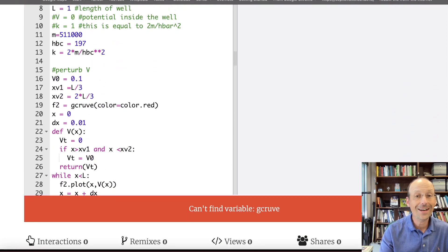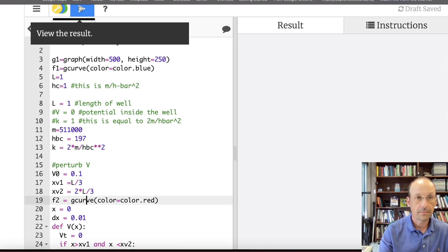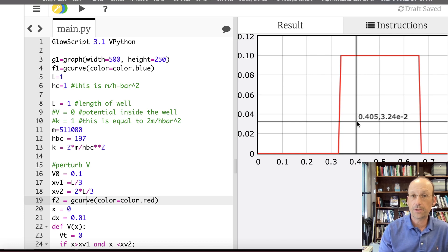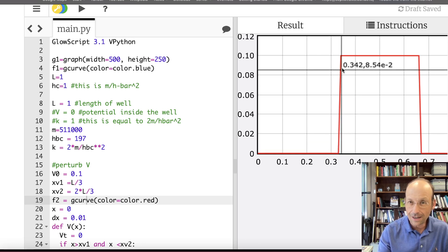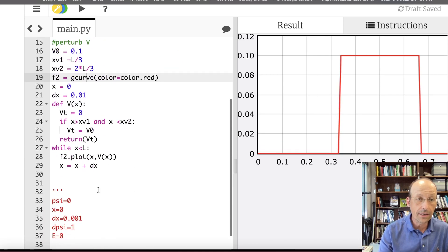So let's, I just want to plot the potential. Let's see if it plots the potential. And it didn't. Good thing I checked. Can't find gcurve. That's weird. Can't find gcurve. gcurve. Okay. So there's my potential. That looks pretty good. You can see it's not completely steep there because that's going from one x value to the next. But overall, I'm pretty happy.